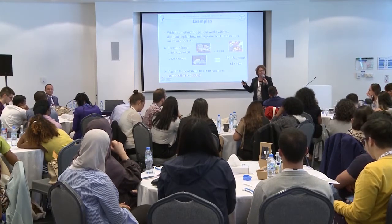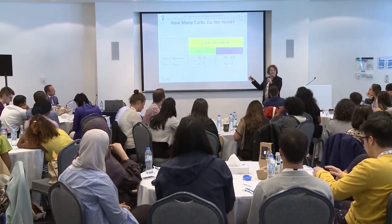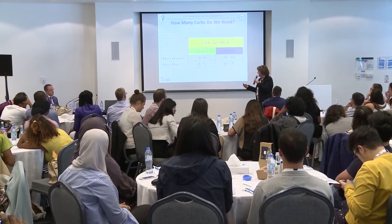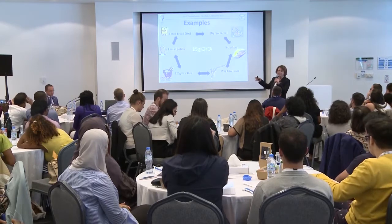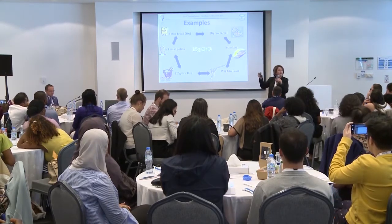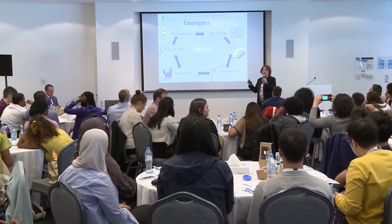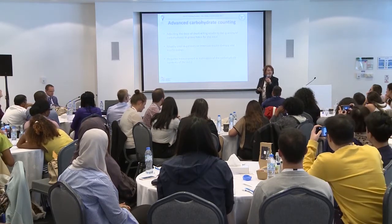You know all this. Your needs for carbohydrates: for most women, three to four choices per meal, which is 45 to 60 grams, and for men, four to five choices or 60 to 75 grams per meal. This is how we teach people with type 2 diabetes to exchange different foods that contain the same quantity of carbohydrates.